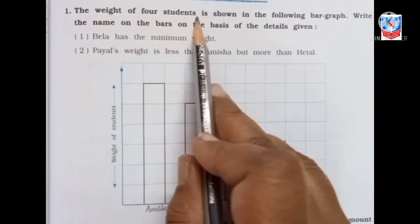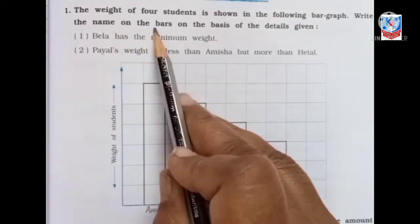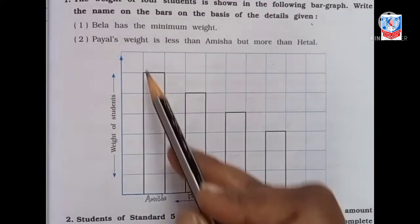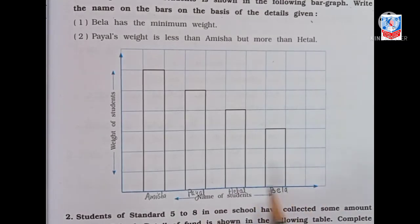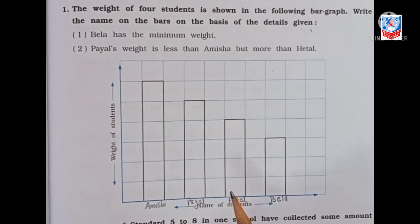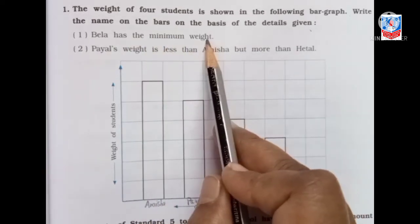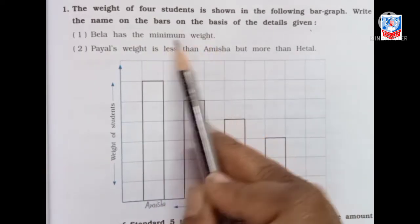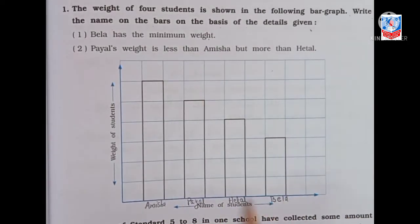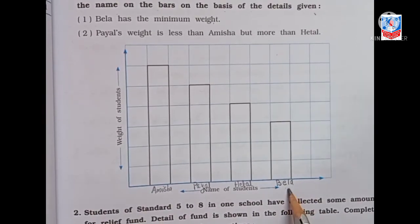The weight of four students is shown in the following bar graph. Write the names on the bars on the basis of the details given below. Bela has the minimum weight — so looking at the bar graph, the shortest bar is Bela. That means this is Bela.